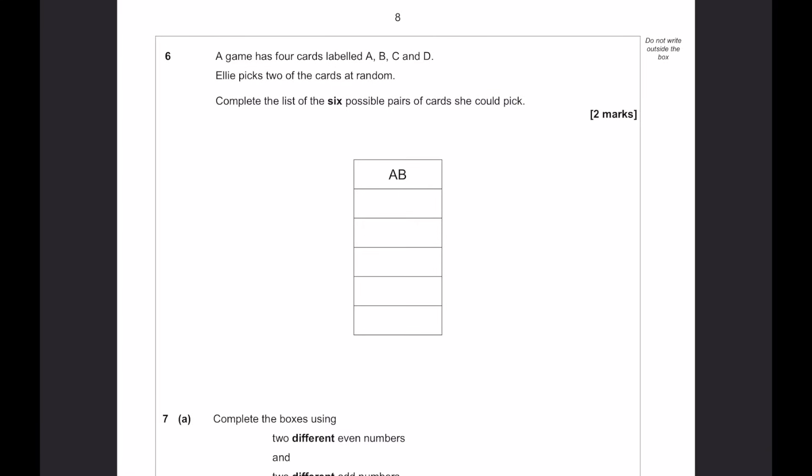Question number 6. A game has 4 cards labelled A, B, C and D. 2 of the cards at random. 6 possible pairs. So, you could have A and C. A and D. Then you could have B and C. B and D. And then C and D. That will be all of them.